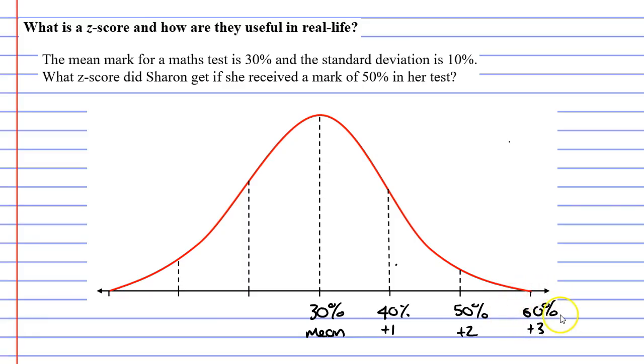And to get 60%, we added the standard deviation three times. When we move to the left, we subtract the standard deviation. We're subtracting 10 each time. So we get 20%, 10%, and 0%. And we write down negative 1,